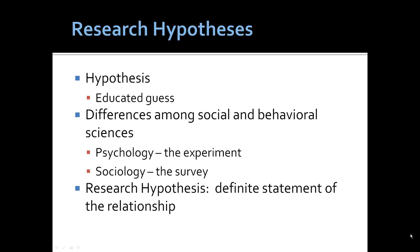Here, to review or re-emphasize, there is a difference among social and behavioral sciences. Psychologists typically rely more on the experiment. Sociologists are far more likely to use survey data. In an experiment, the independent variable is much easier to identify. A research hypothesis is a definitive statement of the relationship between an independent variable and a dependent variable.